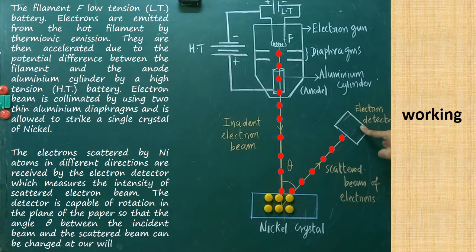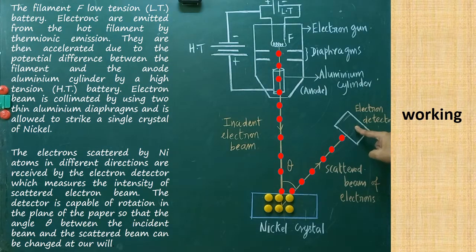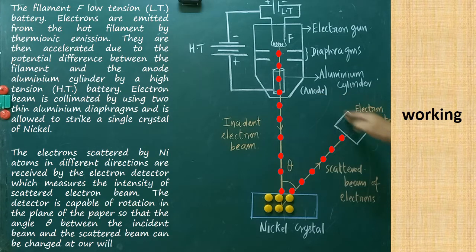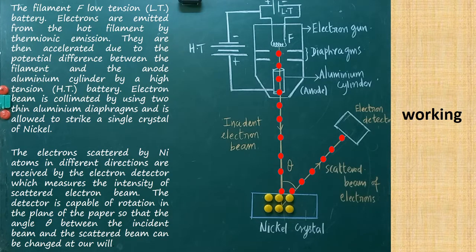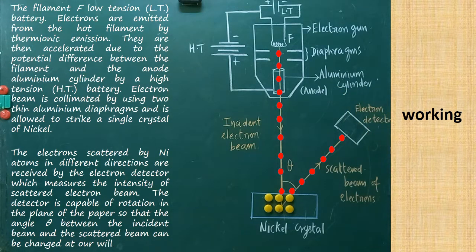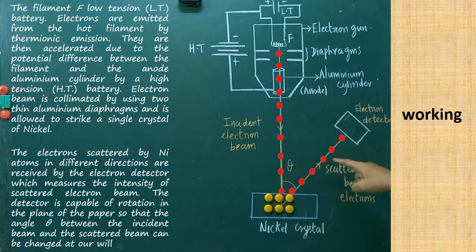The scattered electrons are detected with the help of the electron detector, which measures the intensity of the scattered electron beam. The detector is capable of rotation on the plane of the board, so that the angle theta between the incident beam and the scattered beam can be measured.